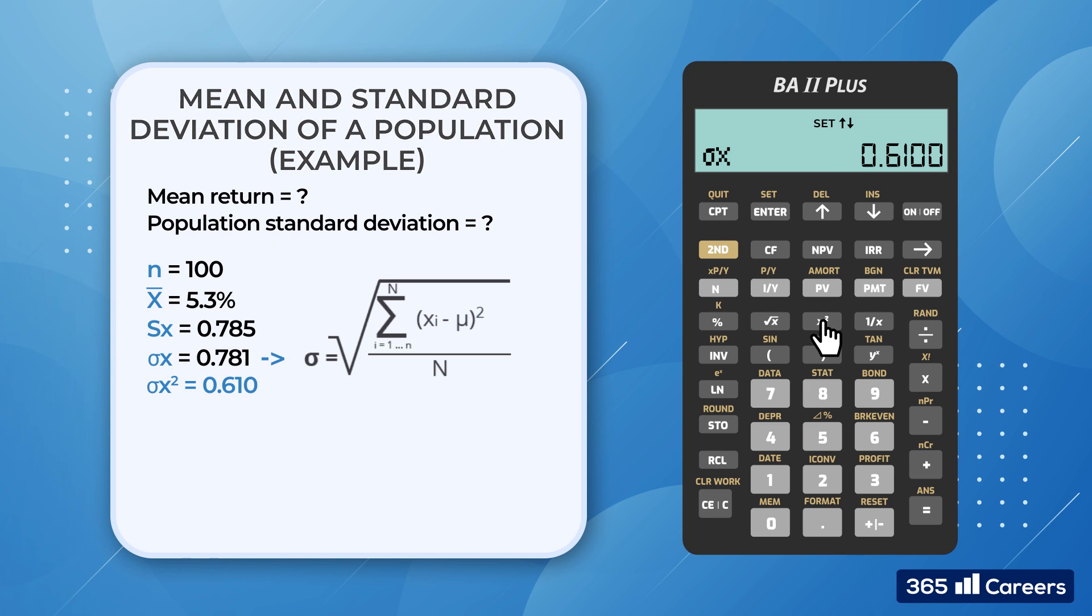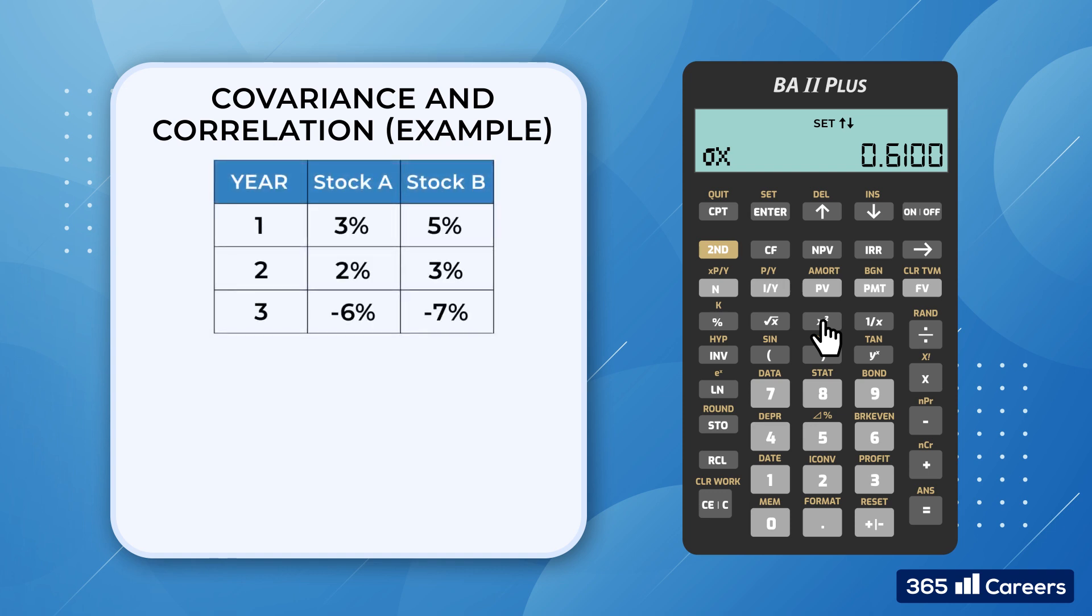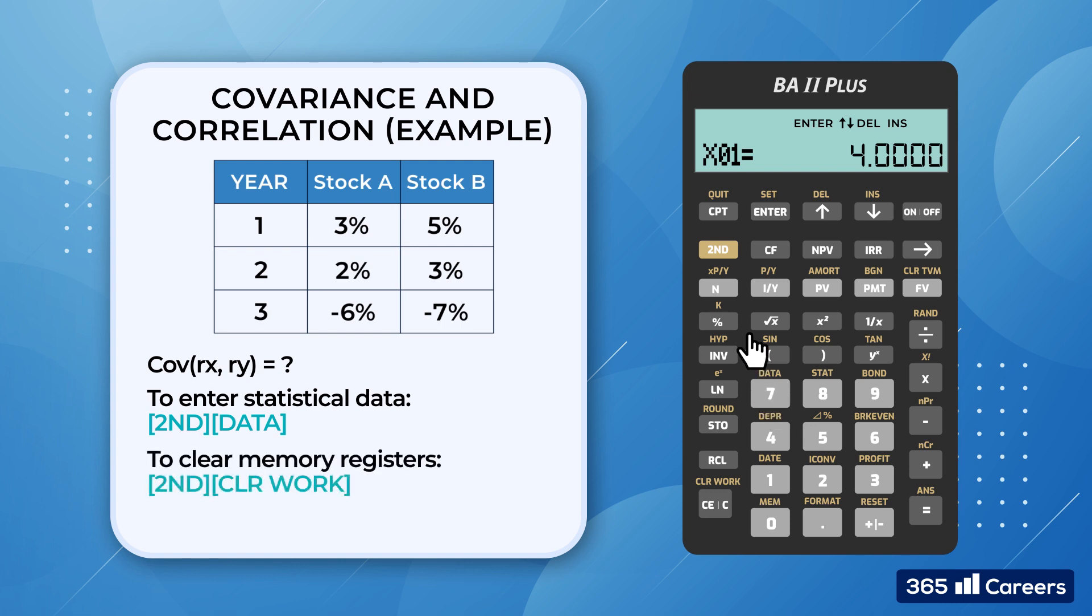Before we finish, let's calculate the covariance and correlation of two variables. The table that you see here provides the returns of two stocks, A and B. We would like to calculate the sample covariance between the two. Alright, let's enter the relevant data by pressing 2nd Data. But before that, we'll clear the memory registers by pressing 2nd Clear Work. Now, we are good to go.